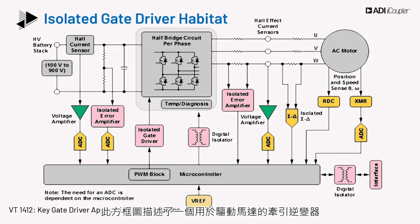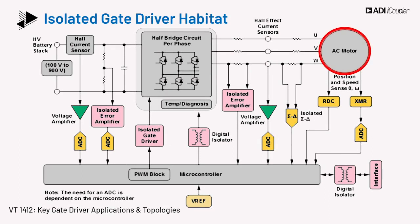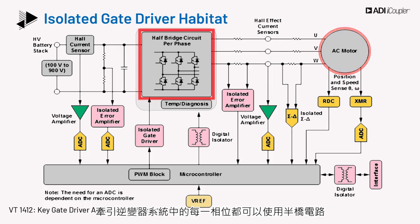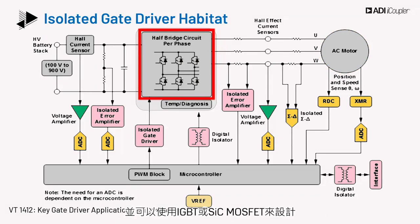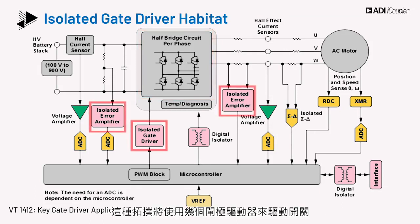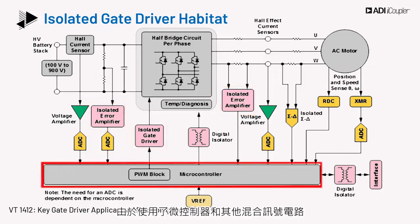This block diagram illustrates a traction inverter which is used to drive a motor. A half bridge circuit may be used for each phase in the traction inverter system, and it may be designed using IGBTs or SiC MOSFETs. Several gate drivers would be used to drive the switches in this topology.